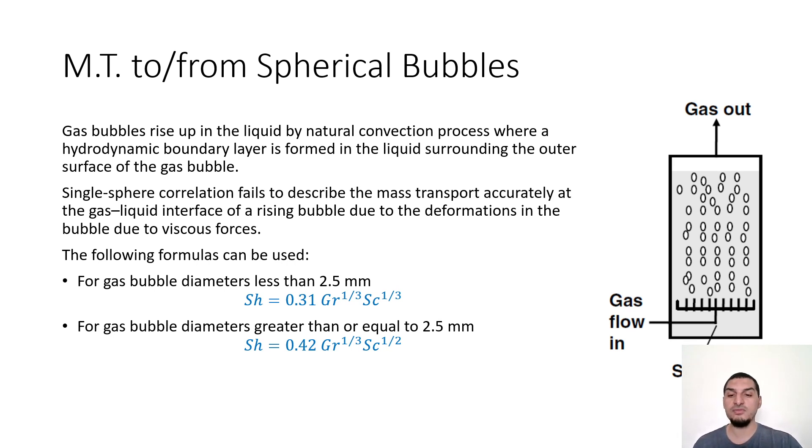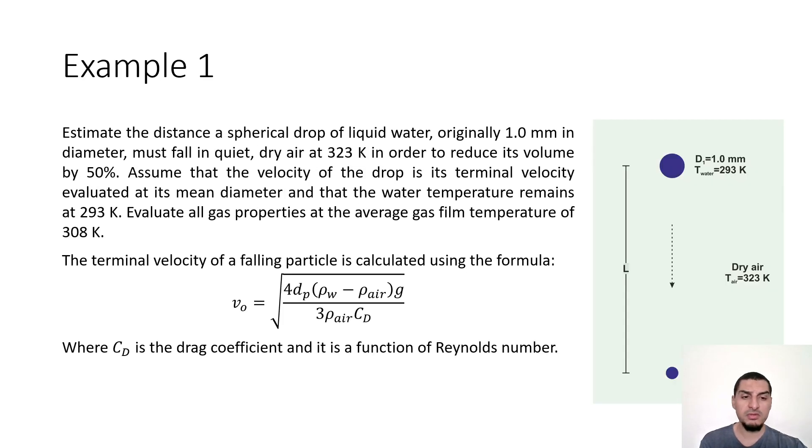For these cases we have two equations. One for small spheres or small bubbles less than 2.5 millimeter we use this correlation, and here we will use another correlation for diameters larger than or equal to 2.5 millimeter. So this is the summary of almost everything you want to mention regarding the first part. Next time we will solve a problem just to have an idea how we can deal with these things. So we'll see you next time.